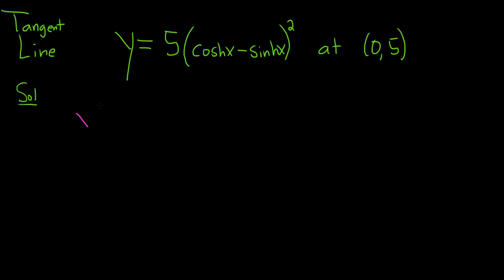So let's do it. So y prime is equal to - the 5 is a constant, so it hangs out. And what happens here is that you have something to a power, so we're going to use the chain rule.